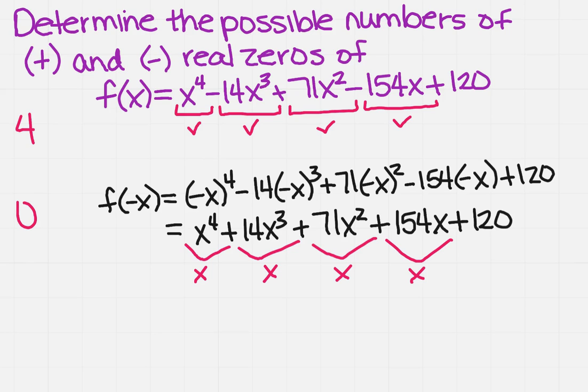So now that we've found out how many changes in sign we have for f of x as well as for f of negative x, how do we interpret that? Well, remember that if it is a number, so like we have four, it's going to change in increments by even numbers. So I could have for f of x, there could be four,